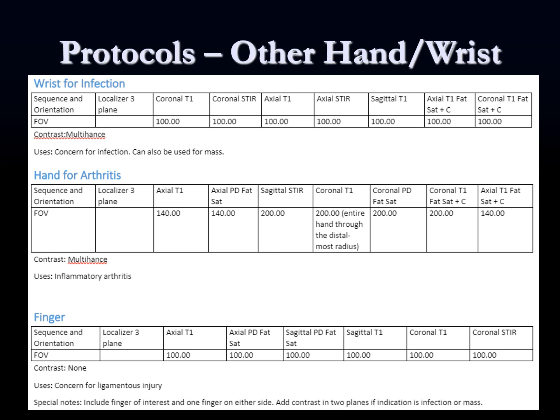Other protocols to know that are out there — if you're protocoling or want to know what else is available, those are on the website. We have a wrist for infection protocol, which uses STIR-weighted imaging for marrow sensitivity for edema and adds post-contrast images for infection evaluation. There's a hand for arthritis protocol, similarly emphasizing STIR-weighted and post-contrast images, helpful in inflammatory arthritis. There's also a finger protocol with a smaller field of view. But the main point is to focus on the routine wrist without contrast protocol.